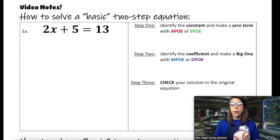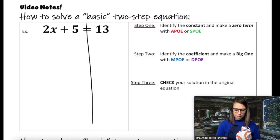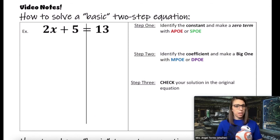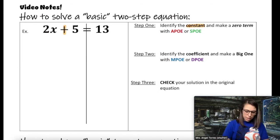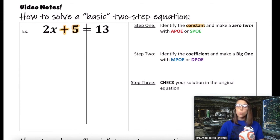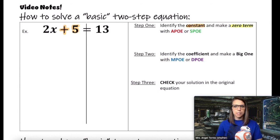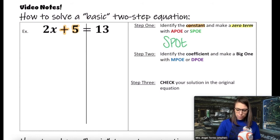Now let's get into how to actually solve a basic two-step equation. There are two steps to solving the equation, and then the third step is to check our work. I always put a line down the middle of my equal sign to separate one side of the equation from the other. The variable is on the left side — that's where I'll be looking. Step one: identify the constant. Looking at the left side, I see my constant is positive 5, the term without the variable. My goal is to make a zero term out of that constant with APO or SPO. How would you create zero out of plus 5? We would use SPO because by subtracting 5 from 5, we create a zero term.